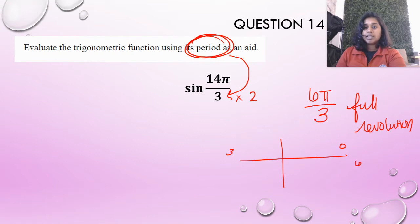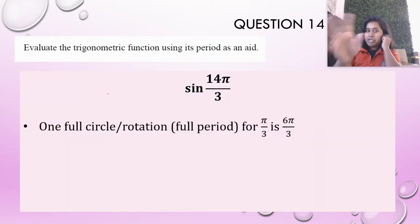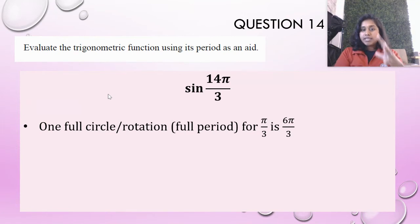You don't believe me? Go back to that unit quadrant one more time. 0, 3, 6. That would be a full rotation, 6π over 3. So 6π over 3 is my full period, my full rotation of sine in this particular radian format. So what I'm going to do is take 14π over 3 and I'm going to take away by 6π over 3 until I get to a good value.